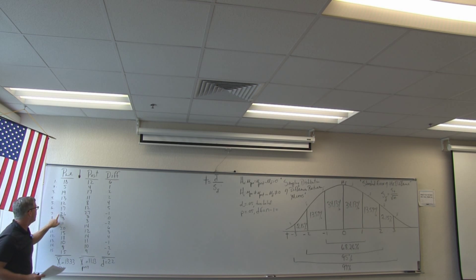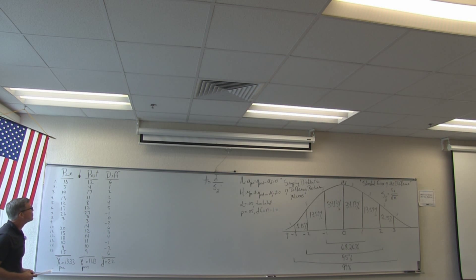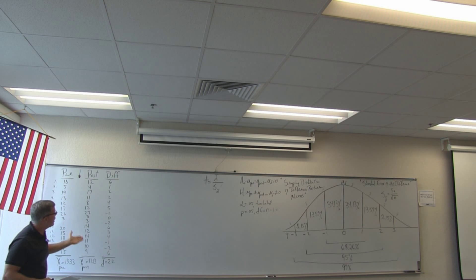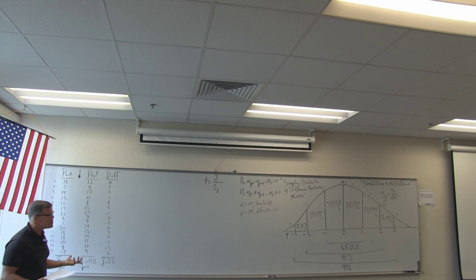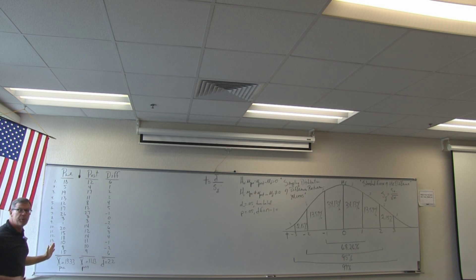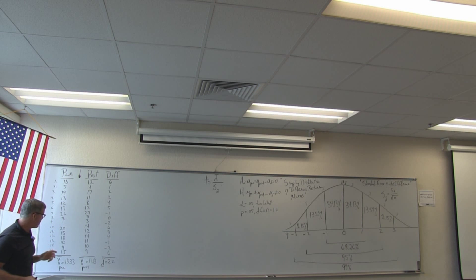Cat number 7 weighed in at 26 pounds, weighed out at 27 pounds for a difference of 1. So we have pre-test data, post-test data, and difference data. We're looking for a significant difference between pre-test and post-test — did the treatment, the weight loss program, have a significant effect at reducing the overall weight of the cats?